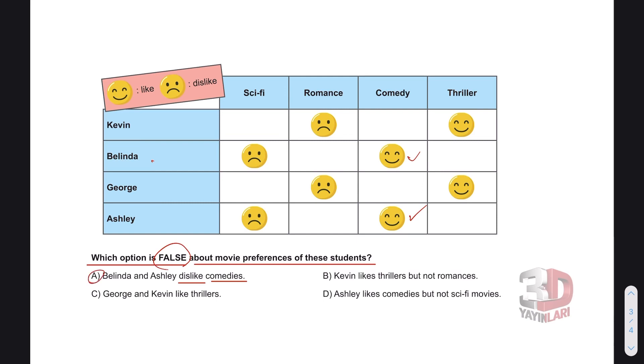Devam ediyorum. B: Kevin likes thrillers, gerilim filmleri, but not romances, romantik filmler sevmez. Kevin does like thriller films and he does not like romance films. Bu doğru. C: George and Kevin like thrillers. George does like thrillers. Bu da doğru. D: Ashley likes comedies but not sci-fi movies. Ashley does like comedies and she does not like sci-fi movies. Bu doğru. Dediğim gibi cevap A şıkkı.